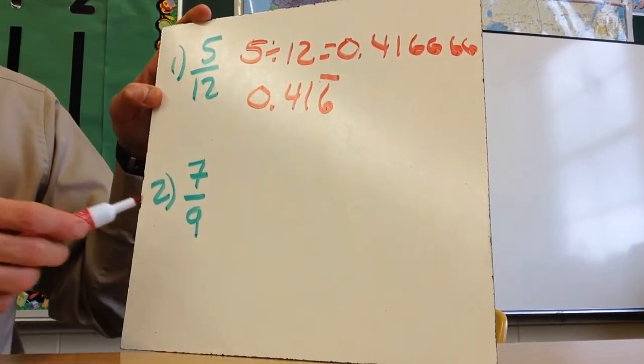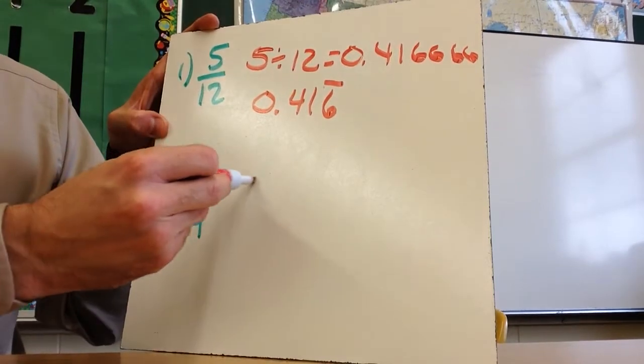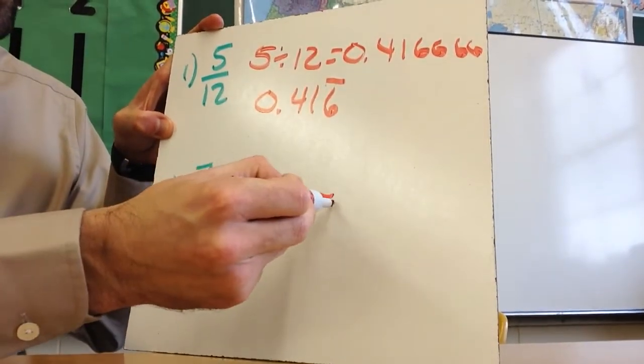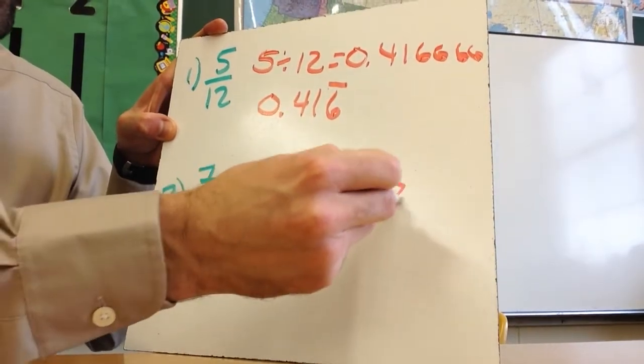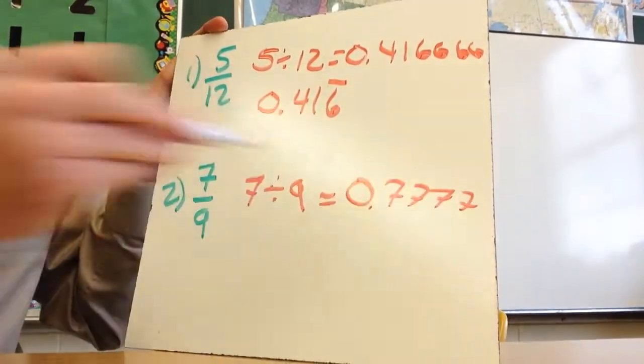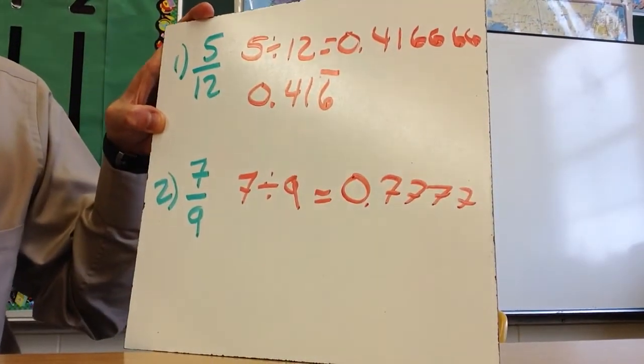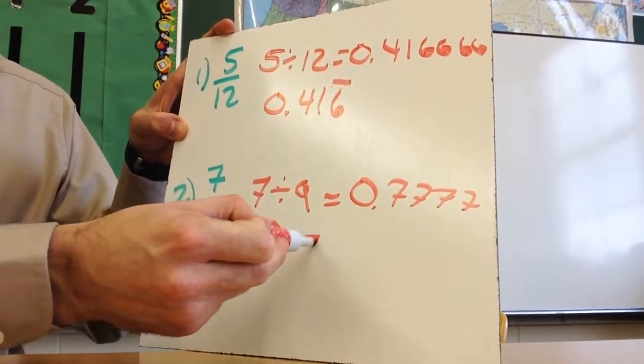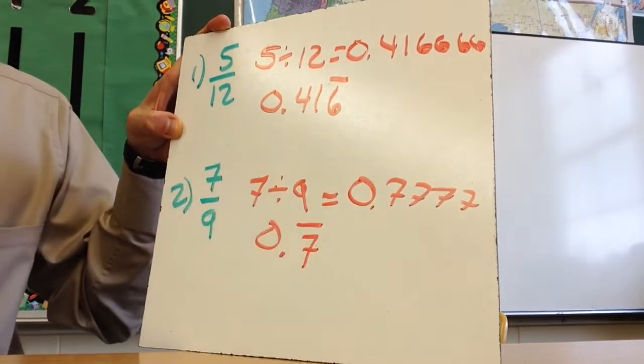Now if you get a problem like the second one, 7 ninths, I type 7 divided by 9 into the calculator, and I get 0.77777, and eventually my calculator is probably going to say 8. But this is because the 7s continue to repeat. This becomes 0.7 with a line over the 7.